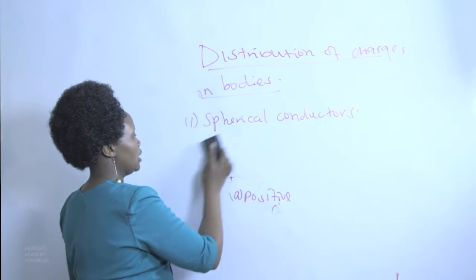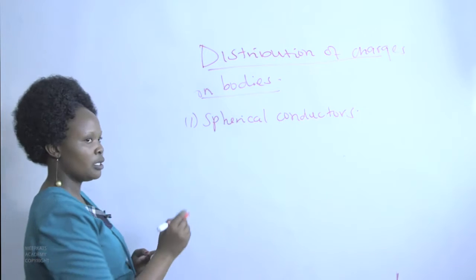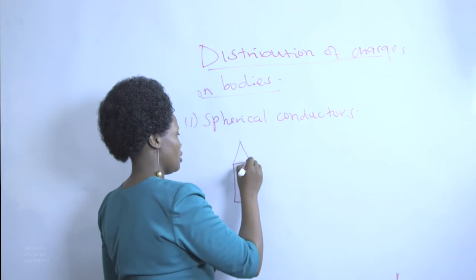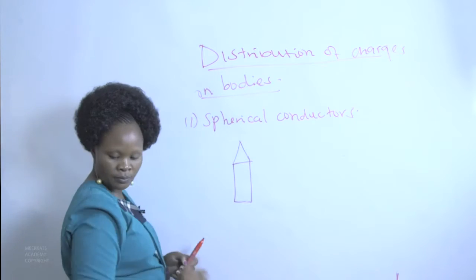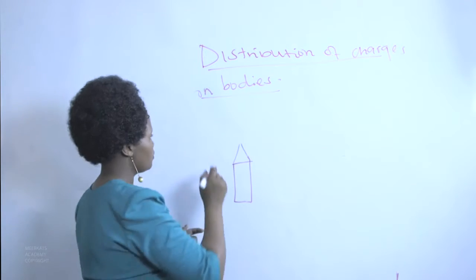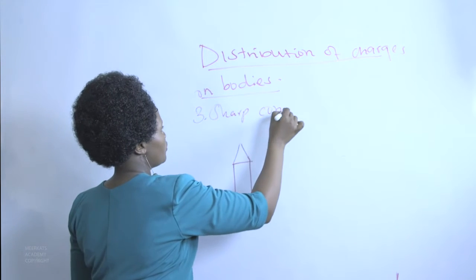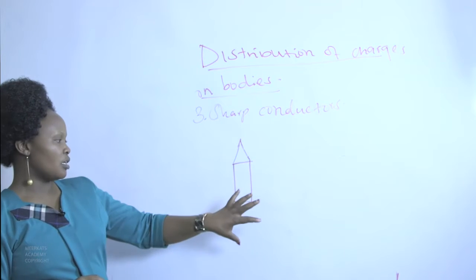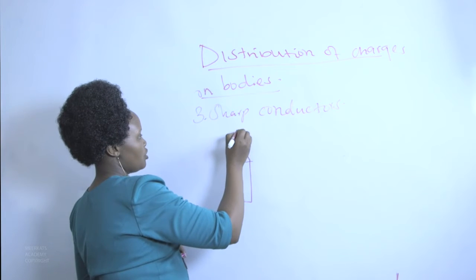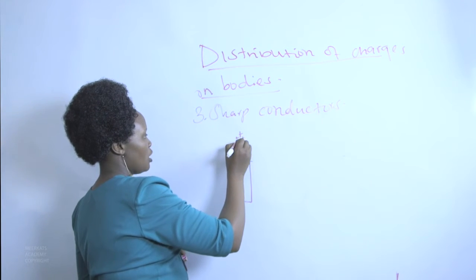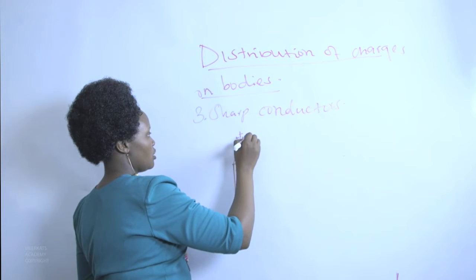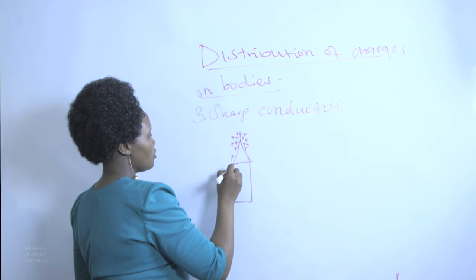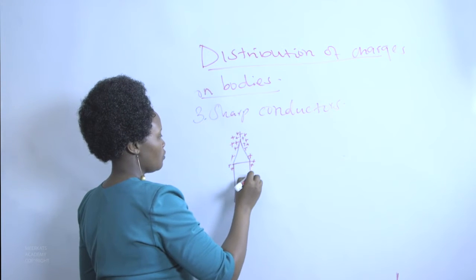Now let us look at a sharp conductor. For a sharp conductor, the charge is going to be distributed in such a way that the sharp point is where we are going to have the highest density of charge. The density lessens as we move to other parts of the conductor — whether the charge is positive or negative.